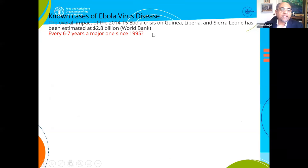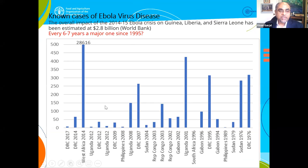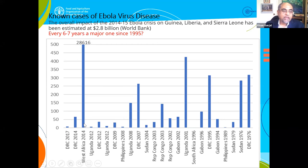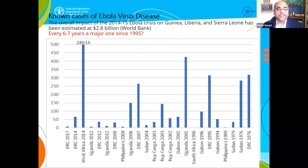I wanted to show Ebola as another example, because the World Bank estimated $2.8 billion of losses in 2014-15. If you look at the pattern, there was DRC in 1995, then Uganda in 2001, then DRC again six years later, then the biggest one in West Africa, and six to seven years later, 2020, it was COVID — a similar crisis. So watch out for 2026-27.